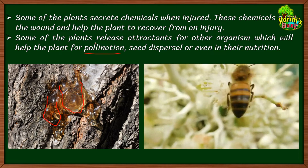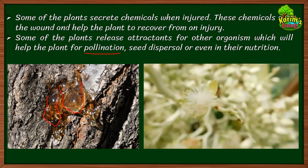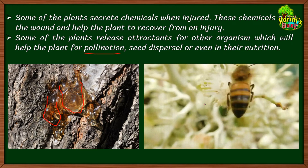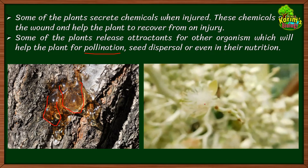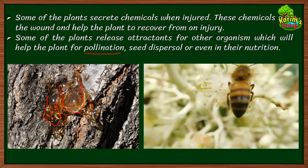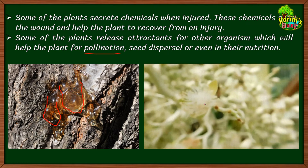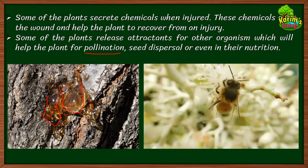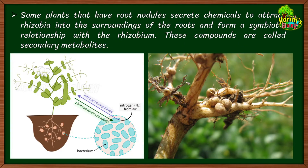Some plants also release attractants for other organisms to help with pollination. Plants that need to attract insects for pollination — such as honeybees and butterflies — release chemicals so that insects visit the flower for nectar, and the plant benefits through pollination. Some chemicals also attract birds which help with seed dispersal.